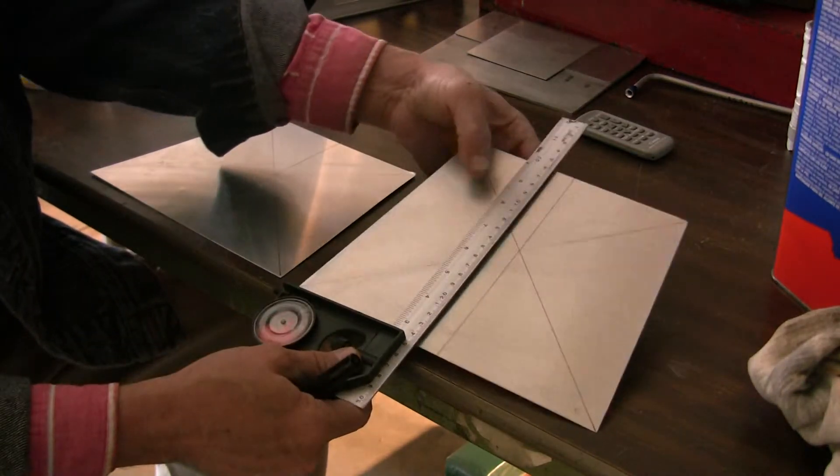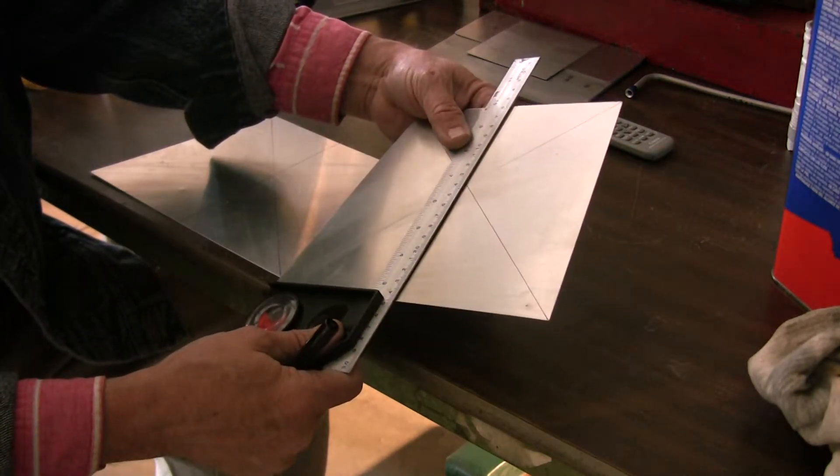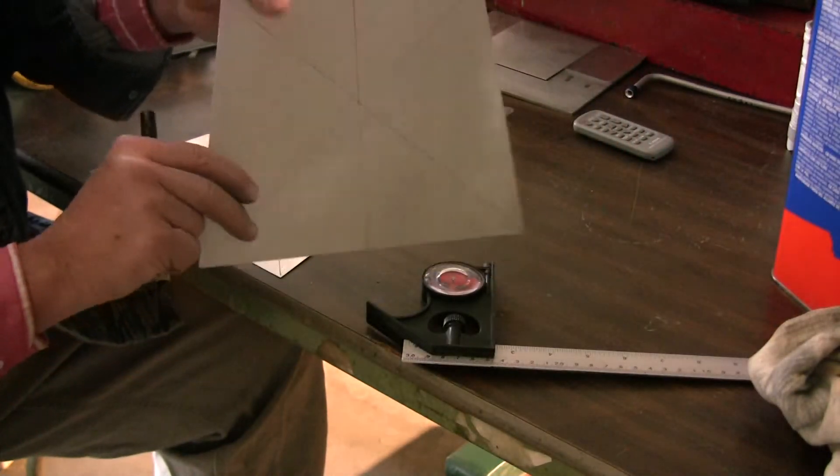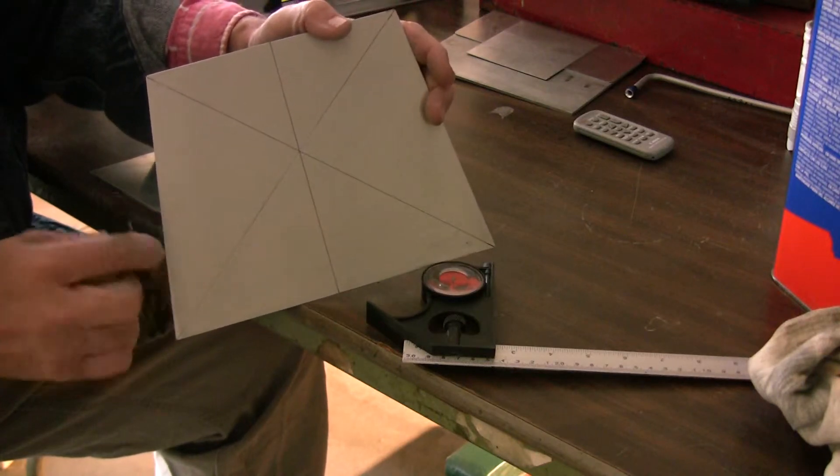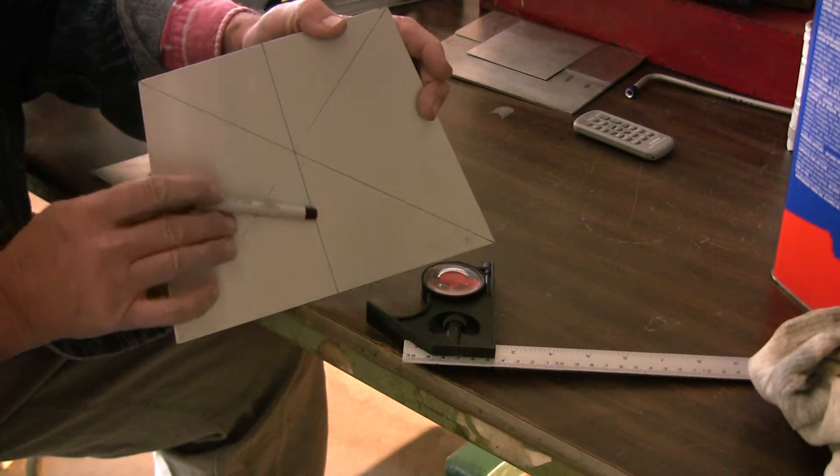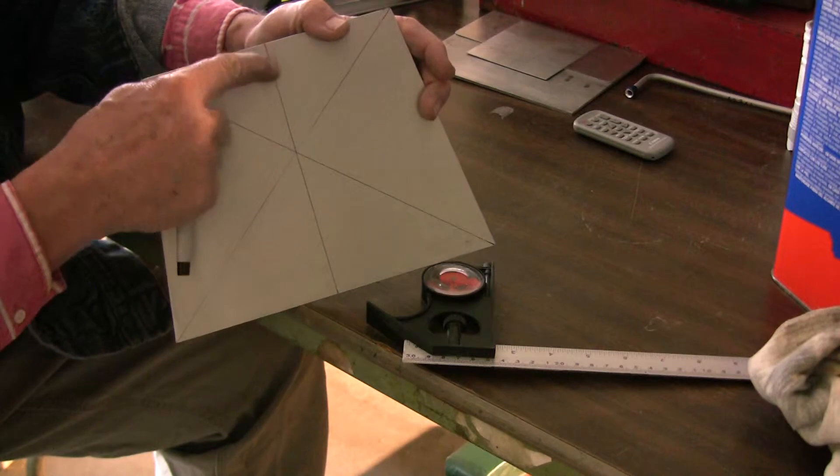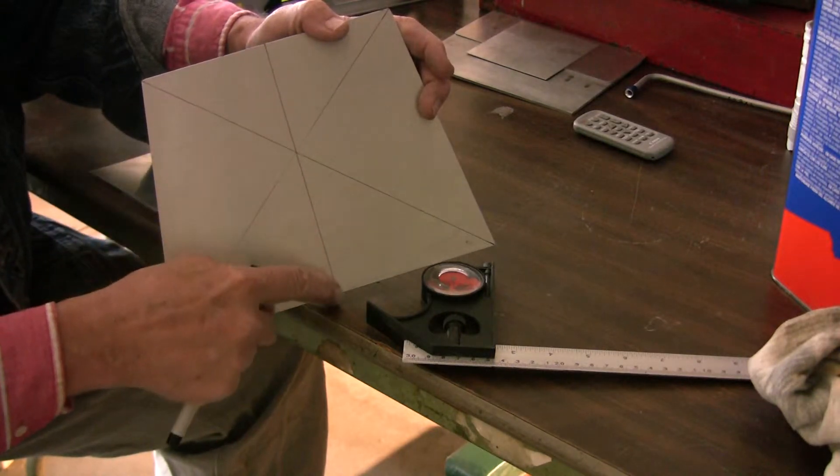You can then draw a line straight up and as you can see here, hopefully you'll be able to see that on the video, this is the line that's going to fit along the trailing edge of your spar.